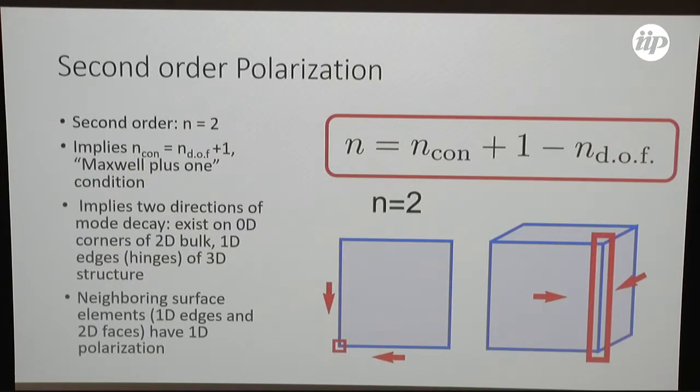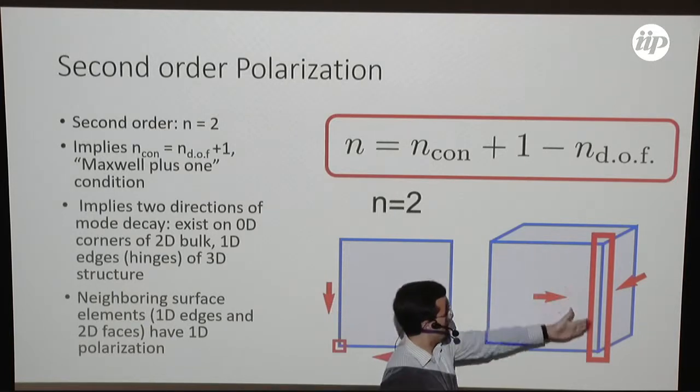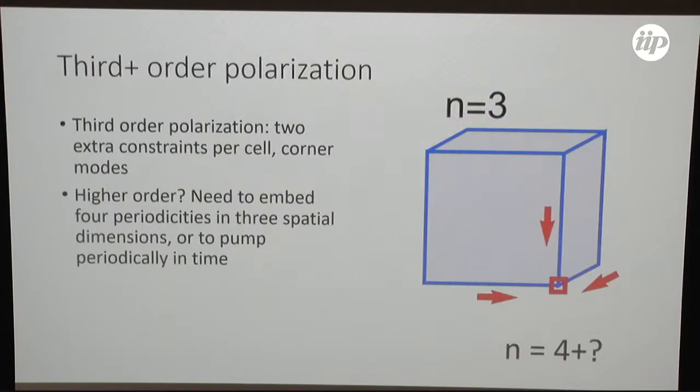For second order criticality, it's different. It's Maxwell plus one. We need one extra constraint per cell. I can just add one more constraint to one of my previous lattices. And what this implies is now that there are two ways in which the mode has to be growing or shrinking. So I can have a mode then that's exponentially localized to a corner of a 2D structure or of the hinge or edge of a 3D structure. And I can keep going. I can add an extra constraint per cell. And then I would have corner modes in a 3D structure. And if I want to go higher than that, I need to find some way to come up with another dimension, which would be embedding a 4D structure in 3D or somehow using time as dimension if I'm taking this through a set of structures periodically.